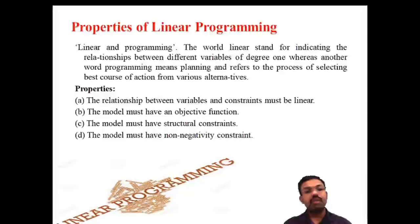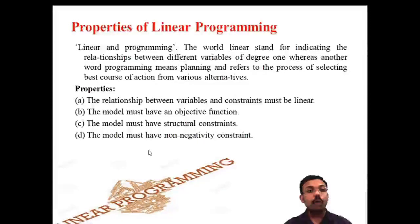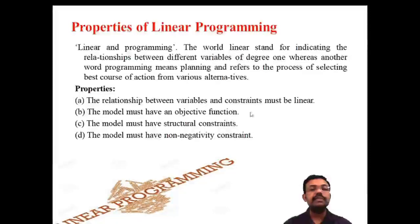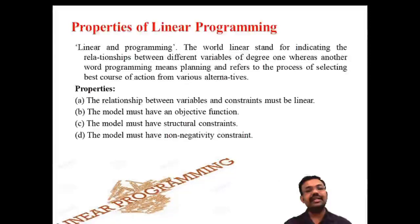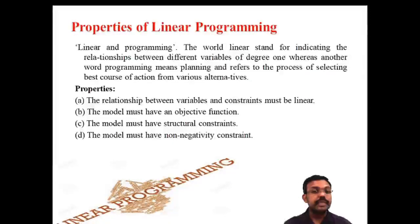We will now discuss the four important properties of Linear Programming. The first important property is that the relationship between the variables and the constraints must be linear. The number of variables and limitations must be linear. That is the first property of Linear Programming.